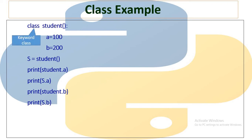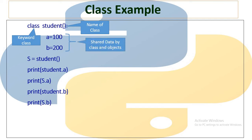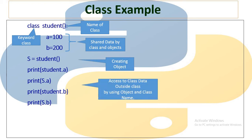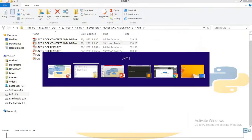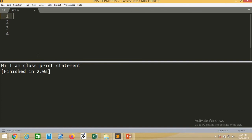The keyword class is very important when declaring a class. The class name and naming conventions in Python must be followed. This is the data of the class which is shared by class and object. The line tells you how you are creating an object. The remaining things are access to class data outside the class by using the object name and class name. We will see an example directly on a programming console about writing a class.